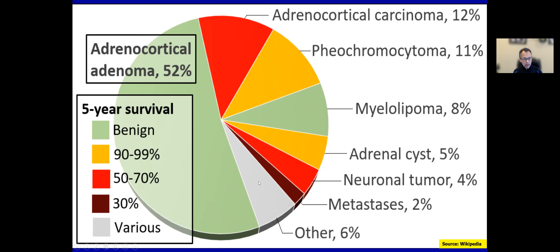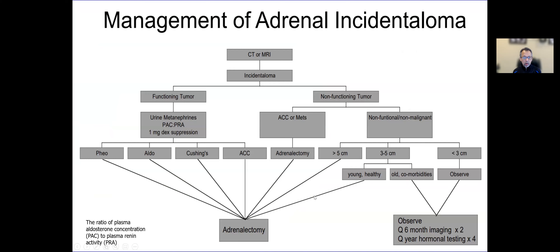The adrenal gland is the site of a variety of pathologies. Majority of them are primary adrenal pathology. As you can see here, over 52% of the tumors are typically benign adenomas, with about equal proportions — around 11–12% — of adrenocortical carcinomas and pheochromocytomas. You can also have a significant number of myelolipomas, many of them incidentally discovered. And then you have adrenal cysts, some neuronal tumors typically seen in younger patients, and another very important spectrum: metastasis.